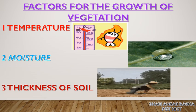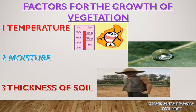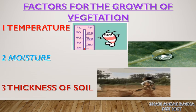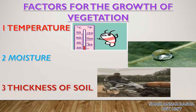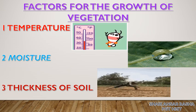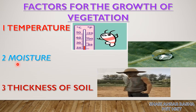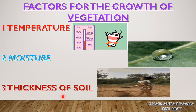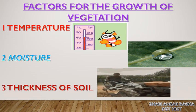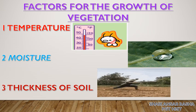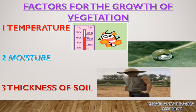What are the factors for the growth of vegetation? There are some factors which are helping for the growth of vegetation. Among those factors, these three are very important. One is temperature — the amount of hotness or coldness, measured in thermometers either in Fahrenheit or Celsius. Next is moisture — the amount of vapour in the atmosphere. The thickness of soil is another important factor because soil has taken millions of years to develop. The more thick the soil is, the better for crop cultivation.